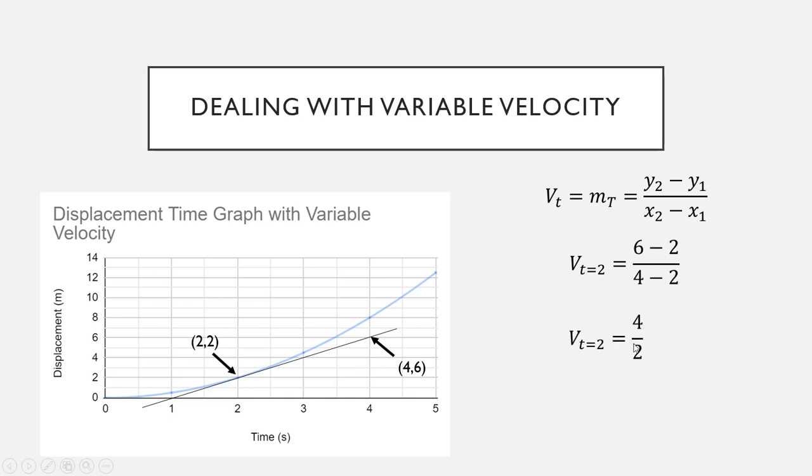Simplify that down a little bit to get four over two. And then when you put that into your calculator or do that with mental math, which is nice and easy, you would find that the velocity at time equals two is two meters per second.